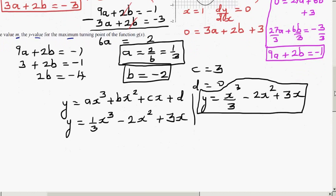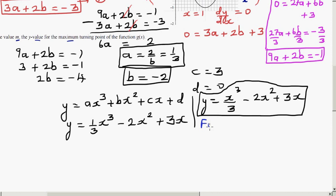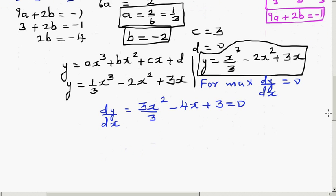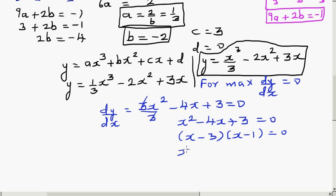To find the maximum, set dy/dx = 0. Differentiating y = x³/3 − 2x² + 3x gives dy/dx = x² − 4x + 3 = 0. Factorising: (x − 3)(x − 1) = 0, so x = 3 or x = 1.